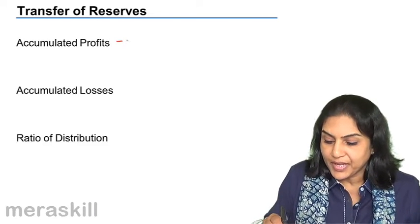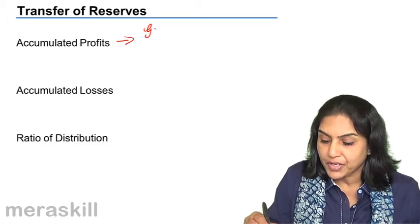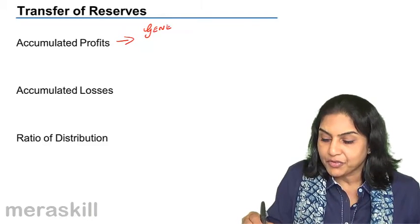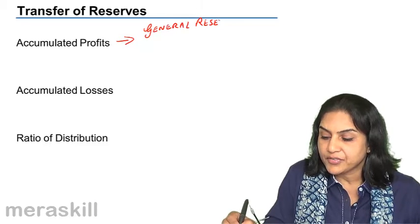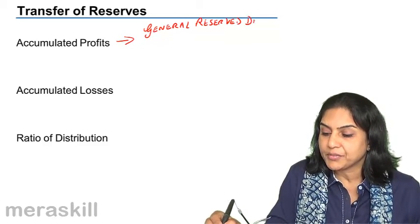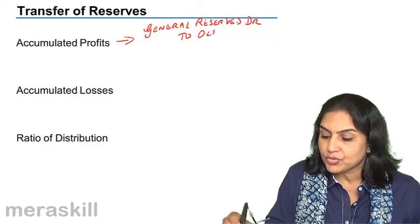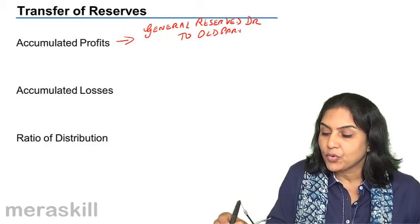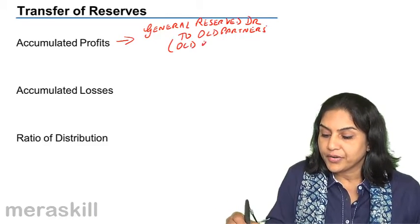So what would be the entry for this? Accumulated profit, we close the profit account. Say for example, if it is general reserve, general reserve account debit to old partners in old ratio. Old ratio.